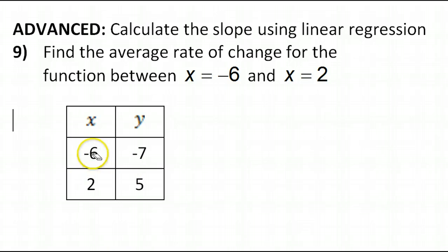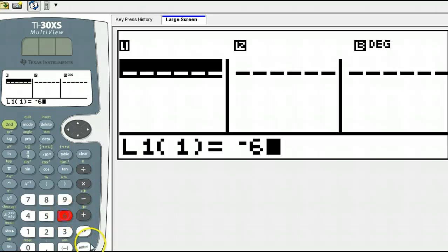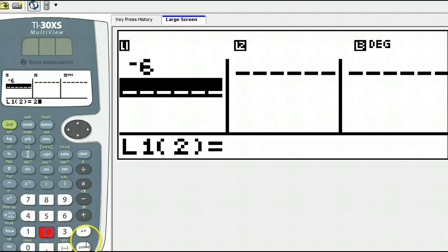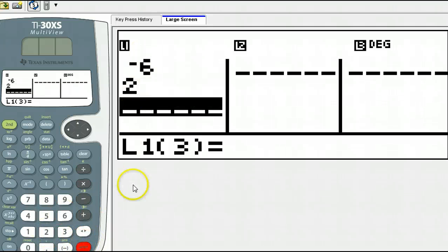And basically let's type in this table into the calculator. So for the X values we have negative 6 and 2. So let's just type in negative 6, ENTER, 2, ENTER. So there's our negative 6 and 2.